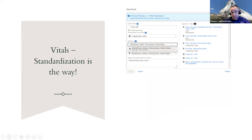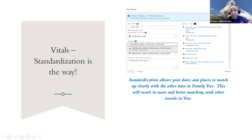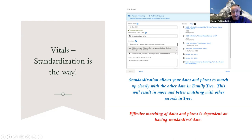In the vitals section — birth, marriage, death, baptism — standardization is really important. By standardizing states and places, you allow FamilyTree to use this data to its best ability when matching with other records, finding sources, or finding people. Standardized dates and places make the system work much better. It's not always perfect, but the more you standardize, the better chance you have of the system finding what you're looking for.